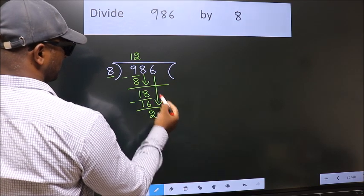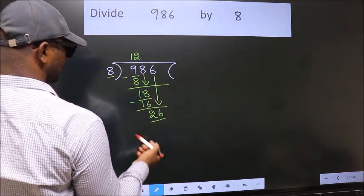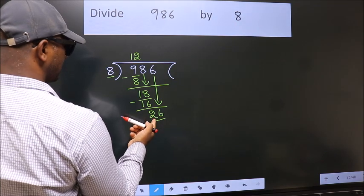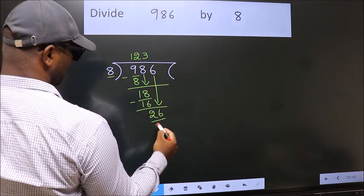bring down the beside number, so 6 down, so 26. A number close to 26 in the 8 table is 8 times 3, which is 24.